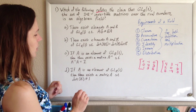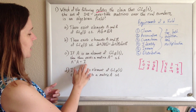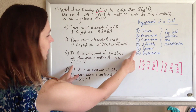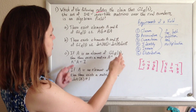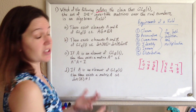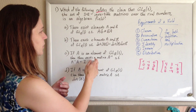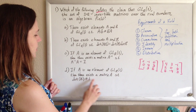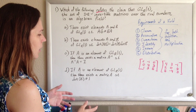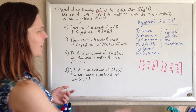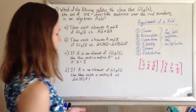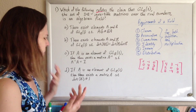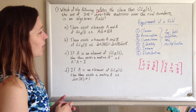Answer C: if A is an element of GL3, then there exists a matrix A inverse such that A inverse times A is the identity. That's actually a good thing for a field — the inverse property of multiplication is a requirement for a field. So this would support the claim, not refute it. Answer D: if A is an element of GL3, then there exists a matrix A such that the determinant of A doesn't equal 1. Again, looking at the requirements of a field, there's nothing about determinants, so we don't care. We still like answer A.